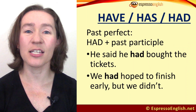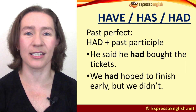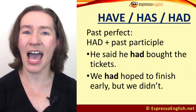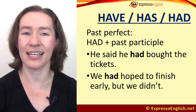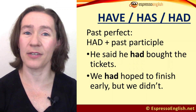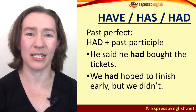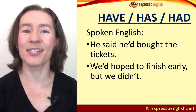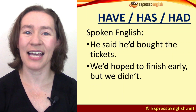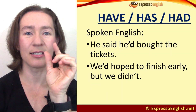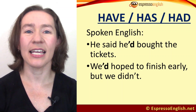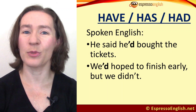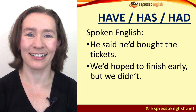In the past perfect we use had for all subjects. For example: he said he had bought the tickets; we had hoped to finish early but we didn't. In spoken English we often shorten had to just 'd — for example: he said he'd bought the tickets; we'd hoped to finish early but we didn't.